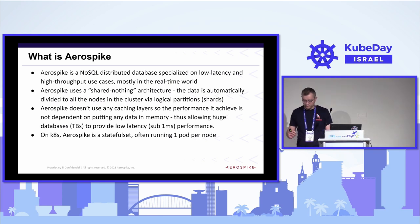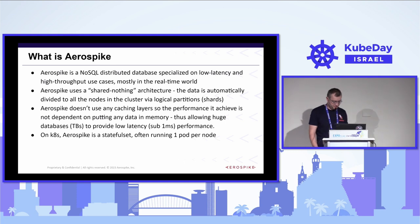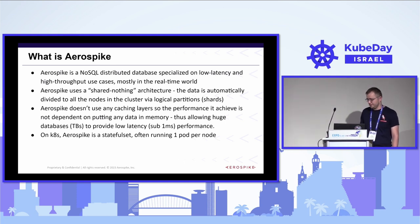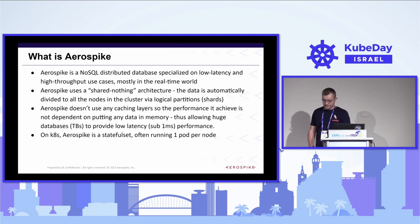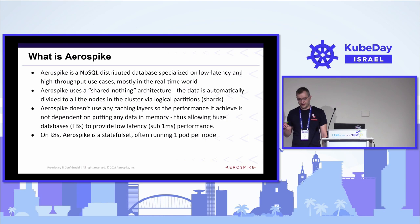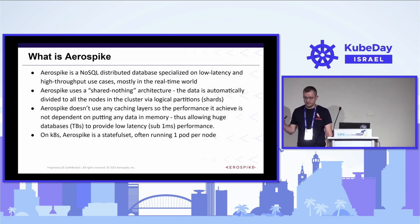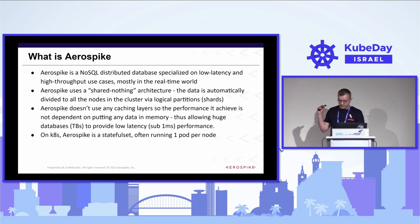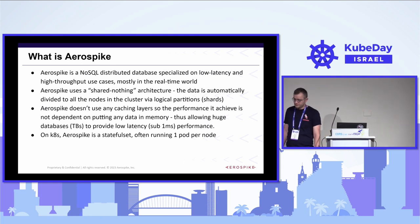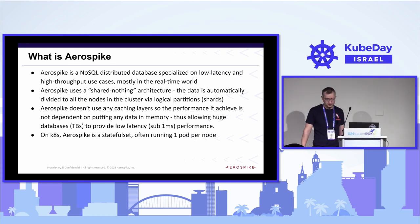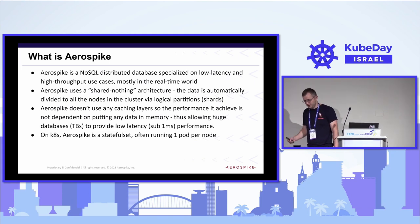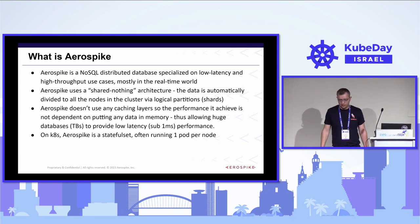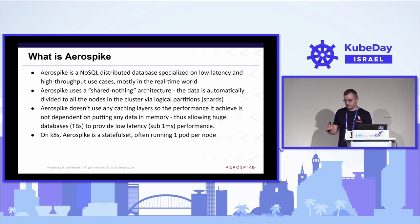AeroSpike is a NoSQL distributed database. It specializes in low latency and high throughput. It's useful for applications that need sub-millisecond data access. It uses a share-nothing data model, meaning that each node of the cluster holds a unique subset of the data. In Kubernetes, we run as a StatefulSet application, meaning that the operator is the preferred way to install an AeroSpike cluster. We also use affinity and anti-affinity rules to make sure that our AeroSpike pods are running on separate nodes.